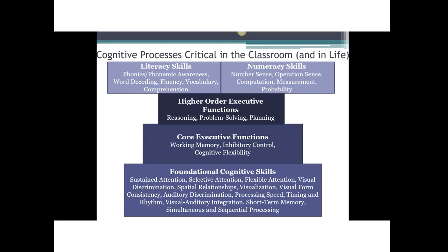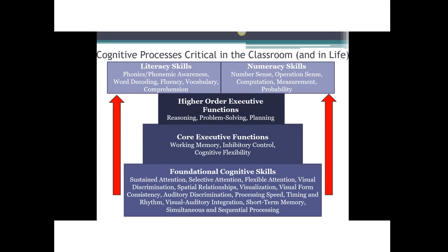On top of that are higher-order executive functions, which include reasoning, problem-solving, and planning — this is where we want all our students to be able to get to. What we see in this model is that all of these cognitive skills — this underlying cognitive infrastructure — are necessary for reading, for math, and for all the other things we teach. But teachers are often asked to teach reading and math without really knowing whether their students have this underlying cognitive capacity, and even when they suspect issues, there has not been a lot they could do about it.